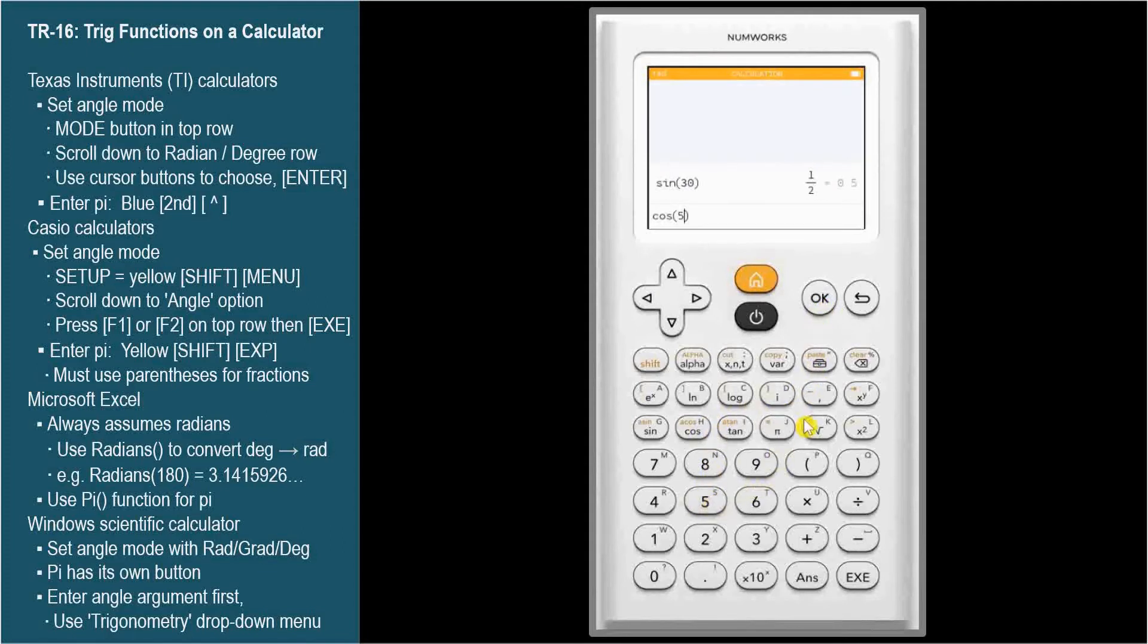Division. 6. Execute. Again, NumWorks gives us both the fractional answer, negative square root of 3 over 2, and also the decimal approximation.